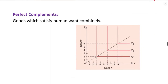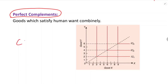The next case is perfect complements. In the case of perfect complements, two goods must be used together in fixed proportions. For example, car and petrol are perfect complements.